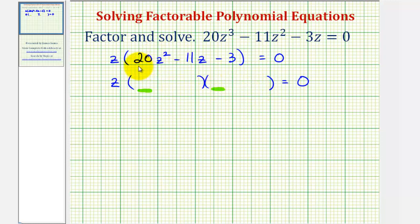must come from the factors of 20z squared. And the terms in the second positions must come from the factors of negative 3. And then the sum of the inner product and outer product must give us negative 11z.